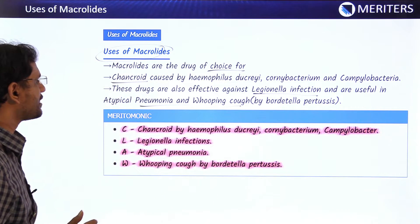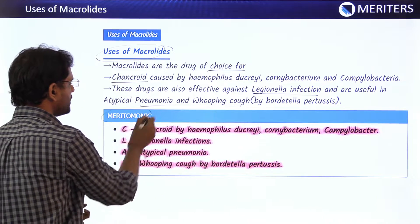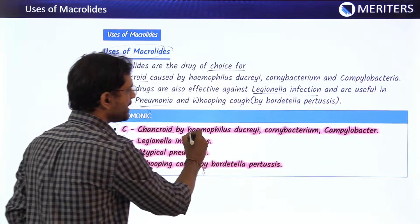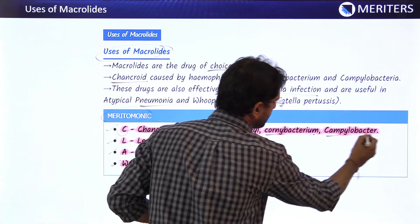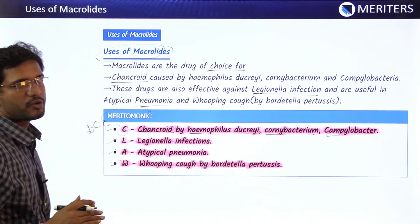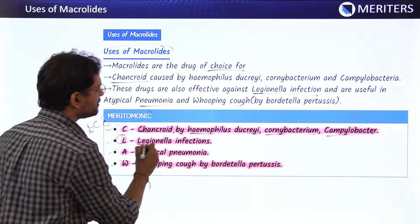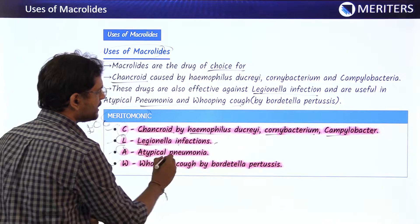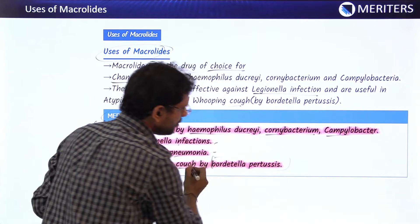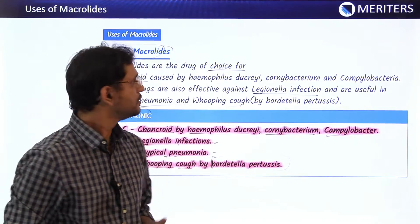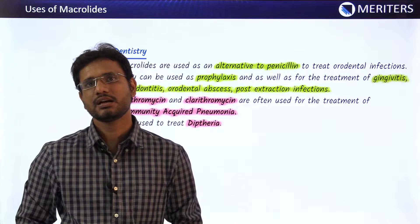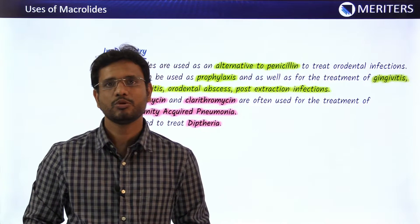To remember all these uses of macrolides, we use a mnemonic known as CLAW. C stands for chancroid caused by Haemophilus ducreyi, Corynebacterium, and Campylobacter — macrolides are the drug of choice for these. L stands for Legionella infection, A stands for atypical pneumonia, and W stands for whooping cough caused by Bordetella pertussis.